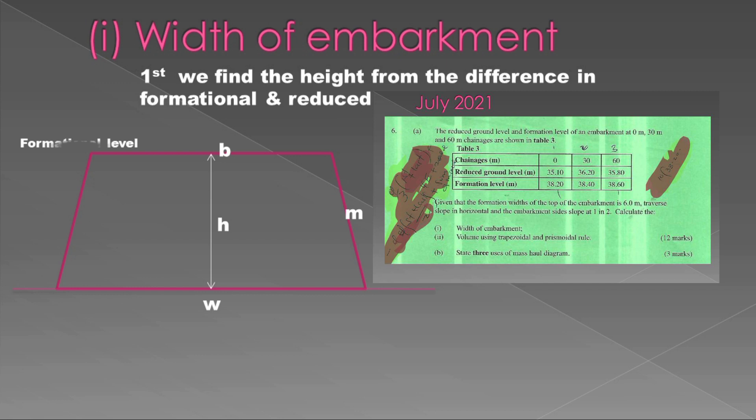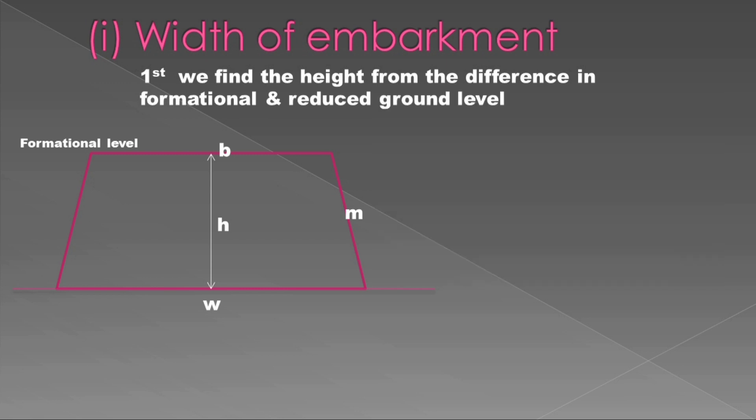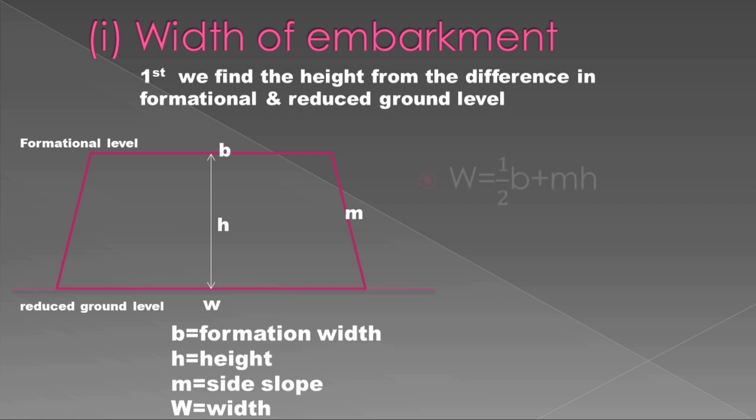You can look at the diagram there; I have illustrated it well. In general, the formula for finding the width will be w equals (b + mh)/2. That is the formula for finding the width of the embankment.